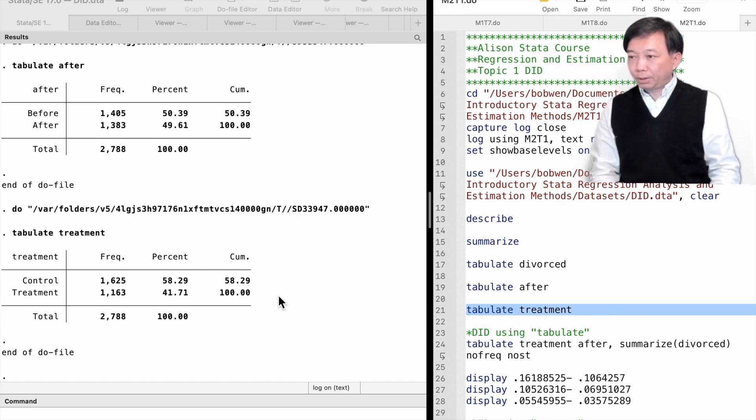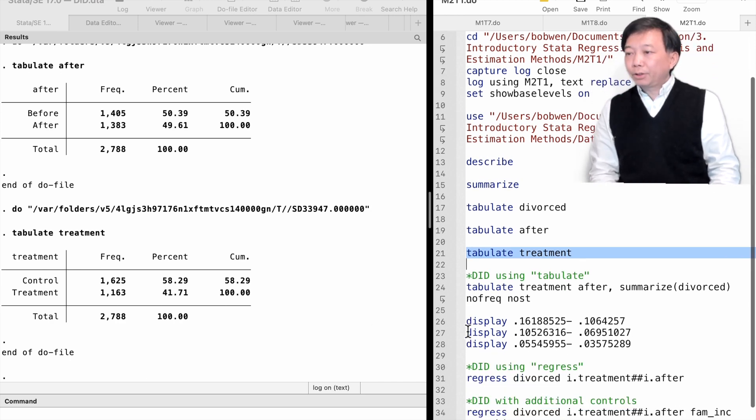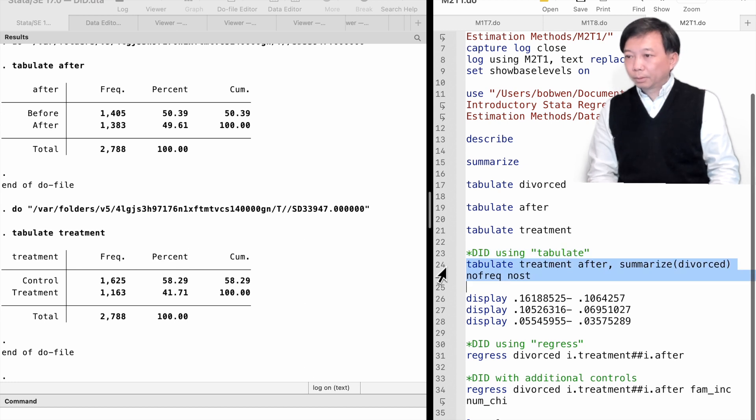There are various ways to perform a difference in differences analysis in Stata. First, we can use the tabulate command to do that. Please refer to the course introductory Stata summary statistics and data management for detailed information about the tabulate command. Let's tabulate the statistics in a two-way table. We type tabulate followed by the treatment variable and after variable. We use the summarize option to show the sample mean of the variable divorced. We also apply the no frequency and no standard deviation options.